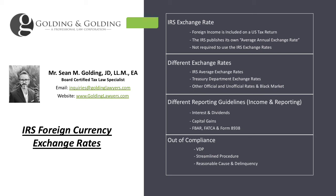Good afternoon, this is Sean Golding with Golding and Golding, here to discuss the basics of IRS foreign currency exchange rates — how to get foreign currency translated into US dollars so you can report it on your tax return. The general rule is that foreign income is usually included on your US tax return, and if it's in a different denomination, you have to convert it into US currency using an exchange rate. There are various exchange rates you can use; the IRS publishes their own average annual exchange rate, but you're not required to use it.